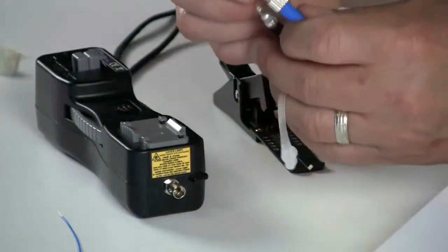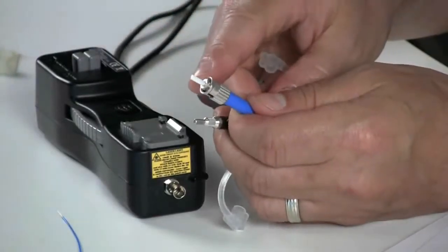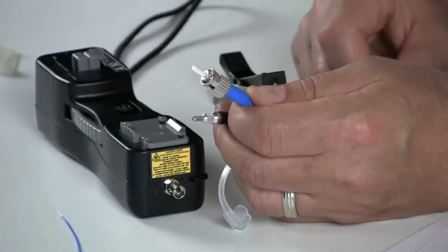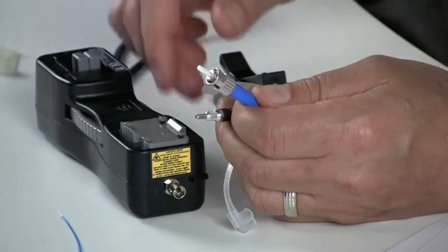Secondly, check the end face of the VFL cord that is utilized in the termination process. You can utilize a video scope or a handheld scope to look at the end face. If the end face is dirty, utilize a kim wipe or a cassette cleaner to clean that.